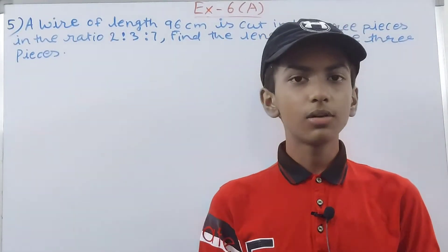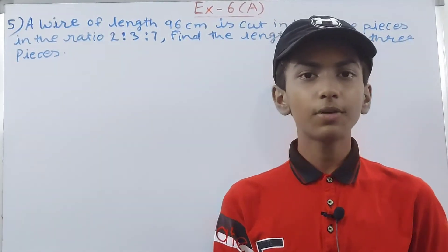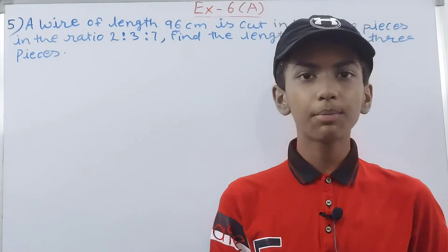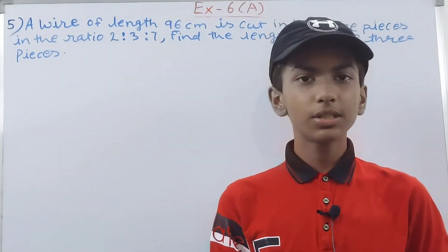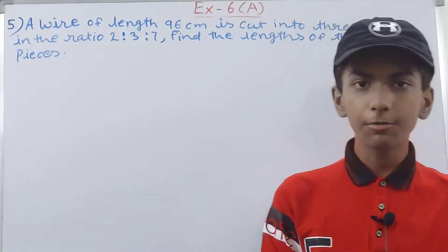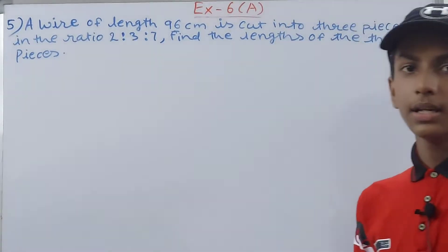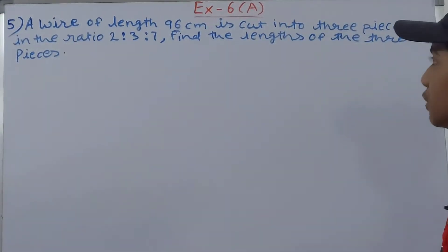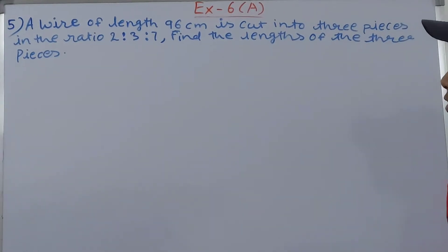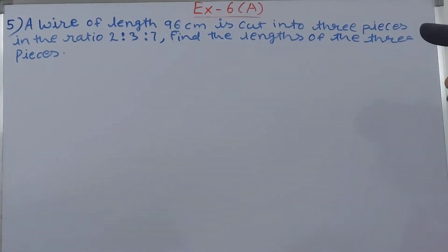Welcome back to my YouTube channel, Local Learning. In this video, we are going to solve ICSE Mathematics Class 7, Chapter 6, Ratio and Proportion, Exercise 6A, Question Number 5. This question is: A wire of length 96 centimeters is cut into three pieces in the ratio 2 is to 3 is to 7. Find the length of the three pieces.